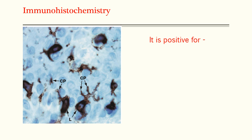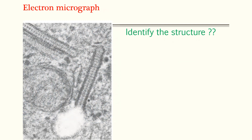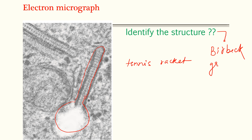Moving on to immunohistochemistry — here we can see the Langerhans cells highlighted by the arrow, with their cytoplasmic processes. They are positive for CD1A. Moving on, we have the electron micrograph — can you identify it? We can see a rod-like structure forming a racket at one end, giving the appearance of a tennis racket. This structure is the Birbeck granule — a cytoplasmic organelle of Langerhans cells with a tennis racket appearance.